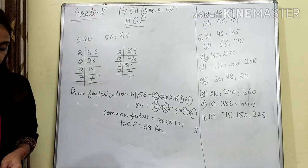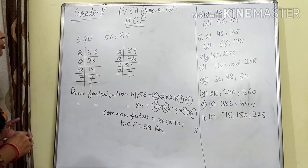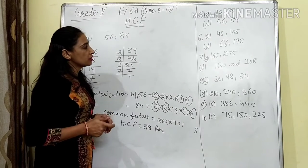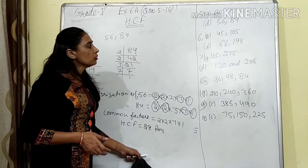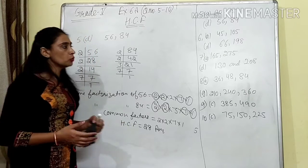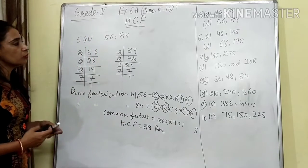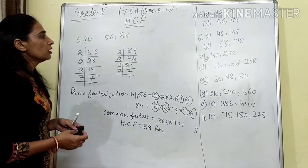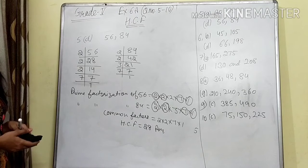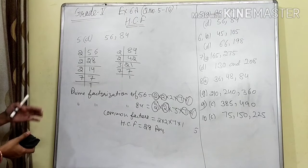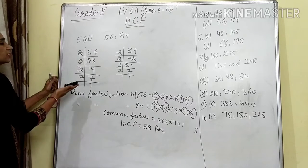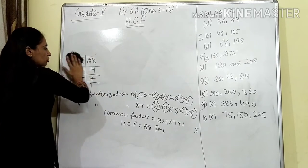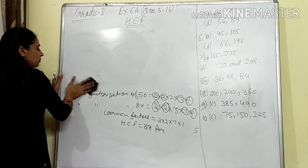Now we will do question number 6. In question number 6, there are parts A and B. I am doing D for you, and you will do the remaining. In part A, 45 and 105 are given — they are divisible by 3 and 5, so you do those with 3 and 5 to get the common factor. That will be very easy. Now I am doing question number 6, D part.